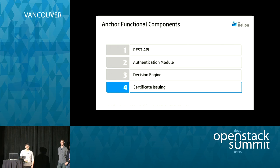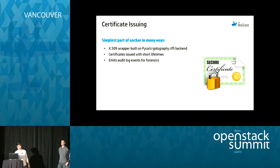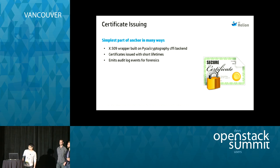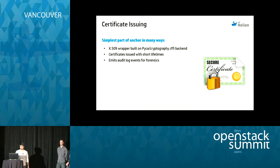Assuming the decision engine says everything is valid, the next step is issuing the certificate. This is the most straightforward part. We don't write our own crypto code — we use PyCA cryptography, an excellent high-quality library which wraps OpenSSL and various other backends through an FFI interface. We added a small amount of X.509 wrapping code for the FFI bindings, and we emit appropriate audit logs recording who was issued a certificate, when, and so on.